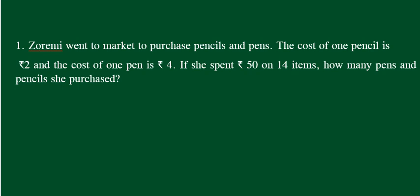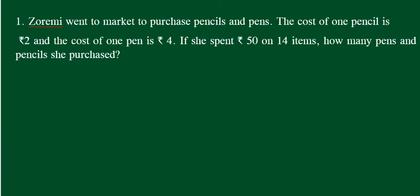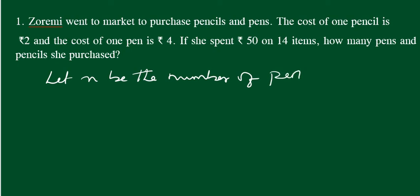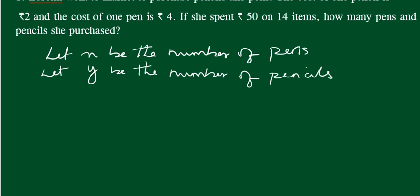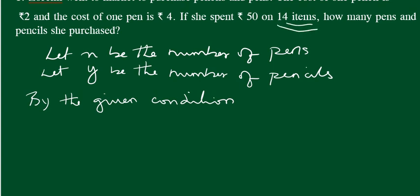You can see the number of pins. How many pins and pencils? You can assume that: let x be the number of pins and let y be the number of pencils. By the given condition, this time there are 14 items total, so x plus y equals 14. Now we have equation 1.